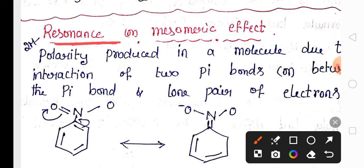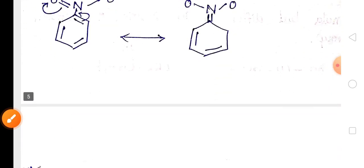In the mesomeric effect, polarity develops in a molecule due to the interaction between two pi bonds, or between a pi bond and a lone pair of electrons.